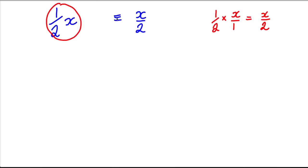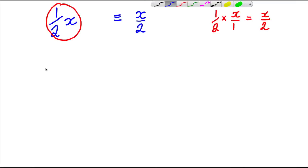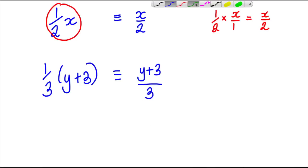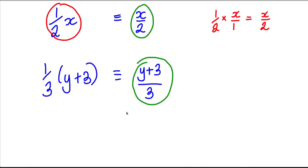It's a very important concept to be able to switch between these ideas. Multiplying X by a half is the same as dividing X by 2. Extending this further: one third times (Y + 3) is the same as (Y + 3) over 3. When solving equations, this notation is more helpful — we can multiply both sides to eliminate the denominator.